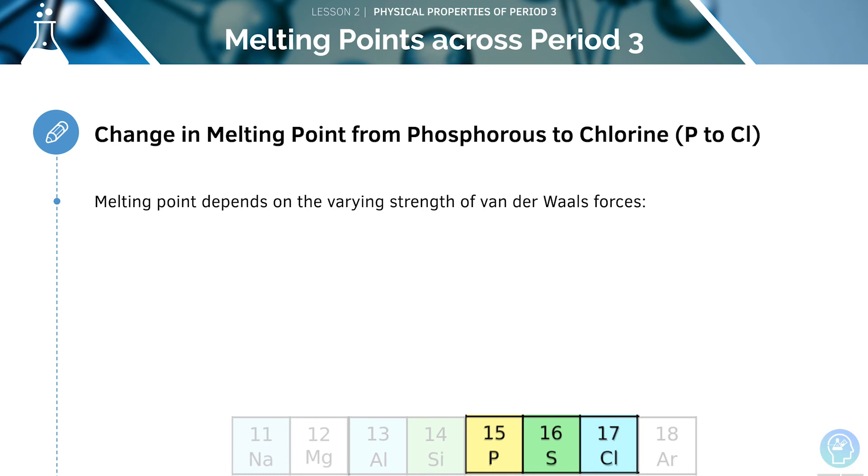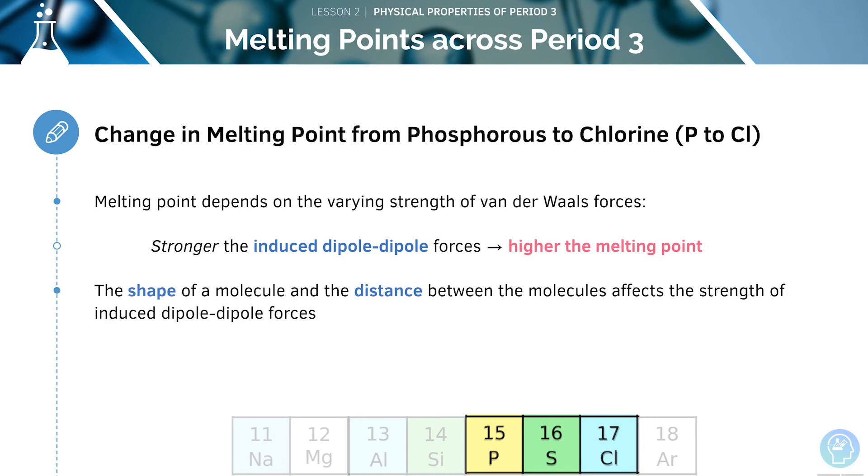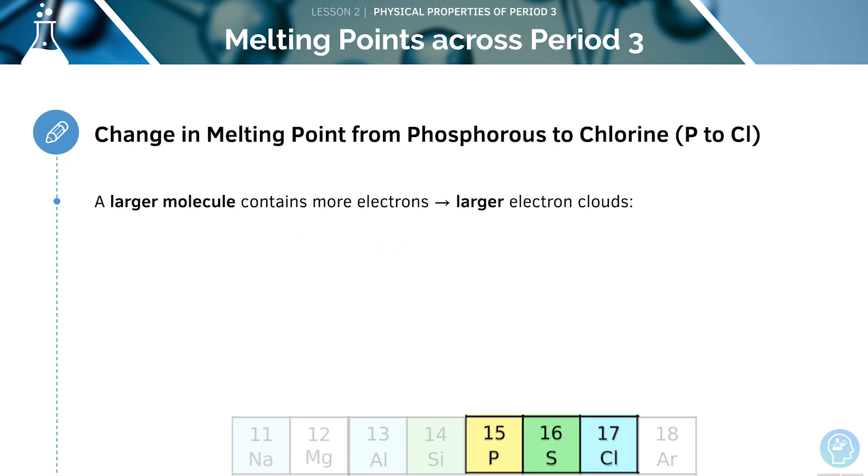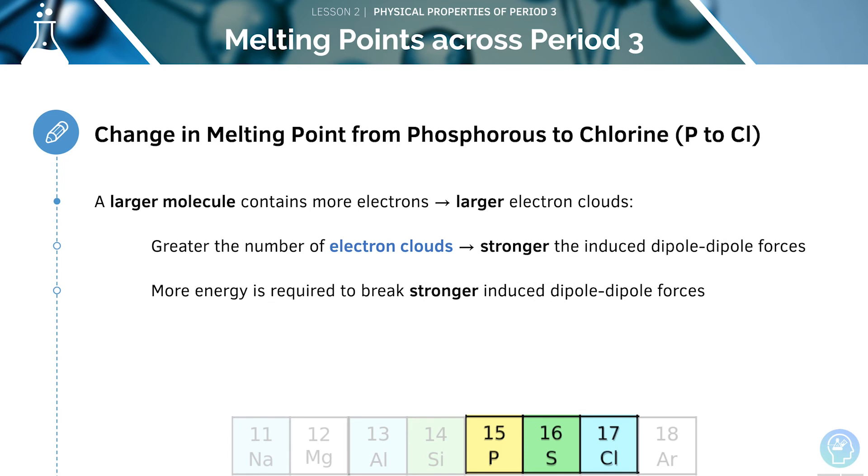The melting point of these substances depends on the varying strength of the van der Waals forces. The stronger the forces are, the higher the melting point. The shape of a molecule and the distance between the molecules is going to affect the strength of the induced dipole-dipole forces. A larger molecule is going to contain more electrons and therefore have larger electron clouds. The greater the number of electron clouds, the stronger the induced dipole-dipole forces will be. More energy is required to break these forces and therefore the melting point will be higher.